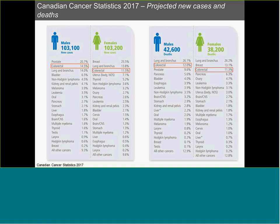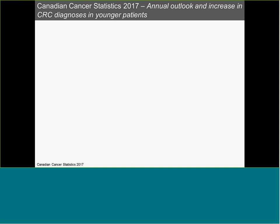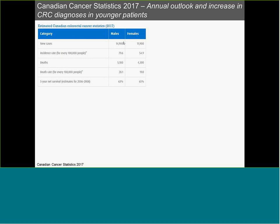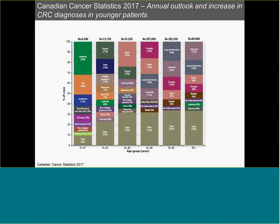Looking at where we are in 2017 with colorectal cancer in Canada, data published in the Canadian Cancer Statistics shows that colorectal cancer remains the second most common new cancer diagnosis and the second most common cause of cancer death in males, and second to breast cancer in women. New cases overall in Canada are still in the 28,000 range. The five-year net survival is currently at 63% for males and 65% for females. If you go back about a decade, these numbers were in the 50% range, so there has been a definite increase.